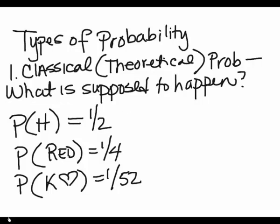Now what I'm going to do is I'm going to talk to you about the types of probability. There's three types. The first one I'm going to highlight is the classical, classical probability, also known as theoretical probability. And that's what I call it. I call it theoretical probability.